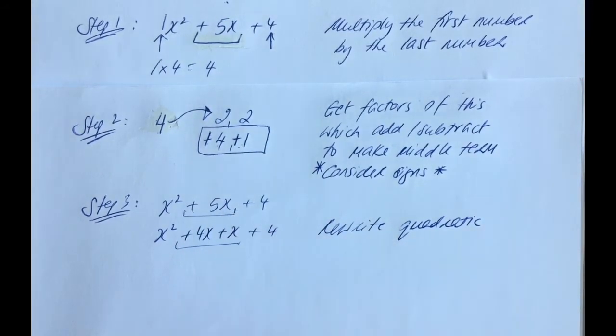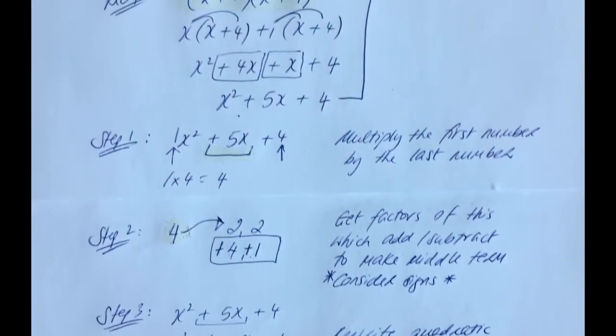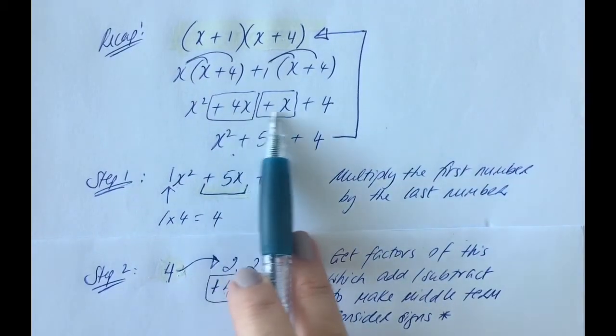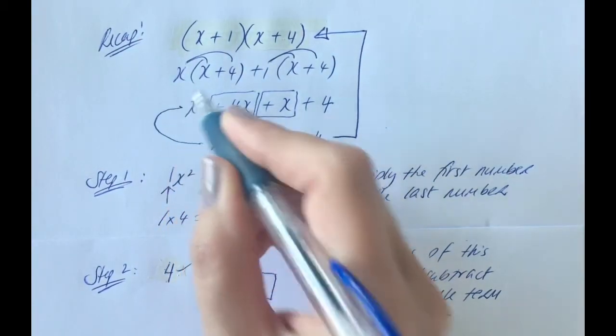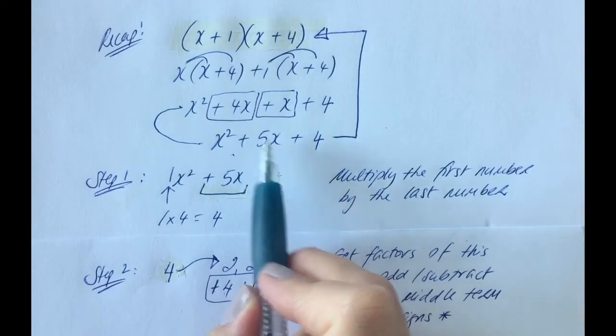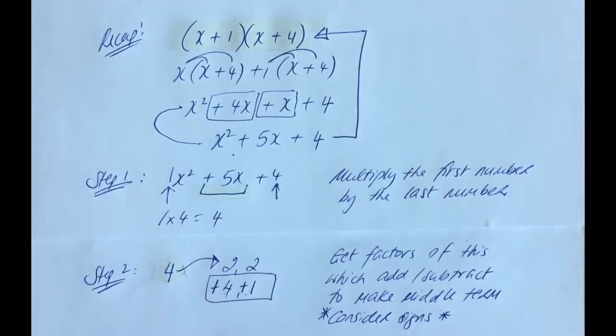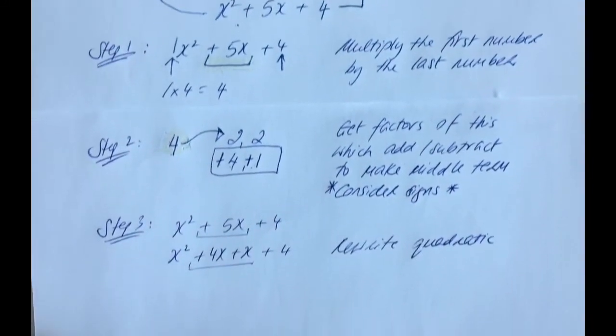So if you remember back to our original example back up here, this is where we're getting from this last step now to this step, you see? Breaking up the 5x into 4x plus 1x. So back down here then.